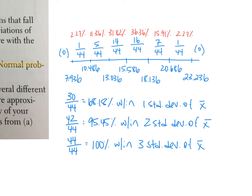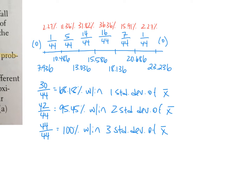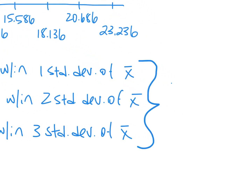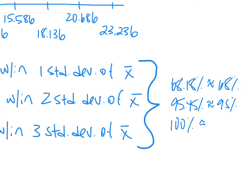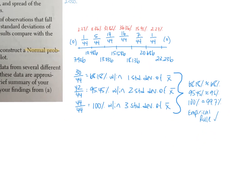Summarizing: 68.18% is very close to 68%, 95.45% is very close to 95%, and 100% is very close to 99.7%. These values are all very close to the empirical rule targets, so this data passes the empirical rule check. I was clear in labeling all my work and showing where all the numbers came from to make sure you get full credit. That completes step number two when assessing normality.